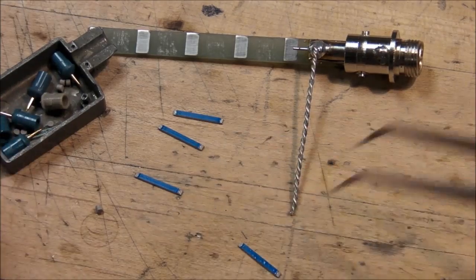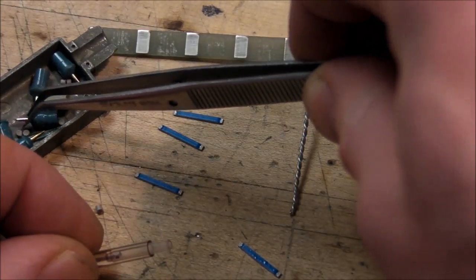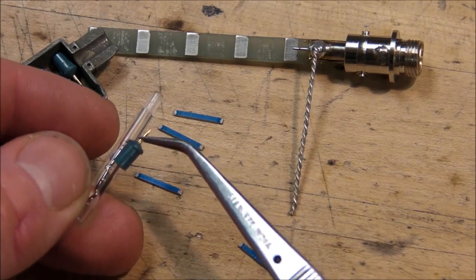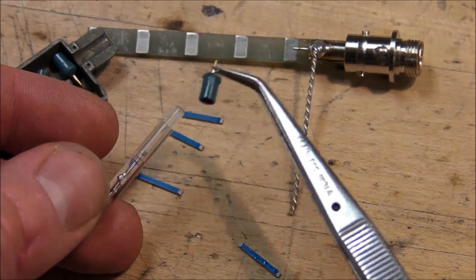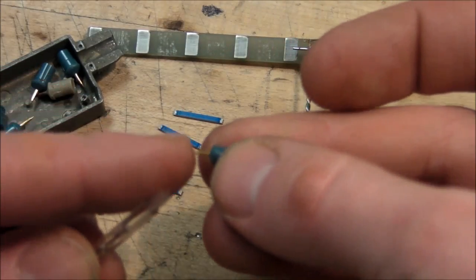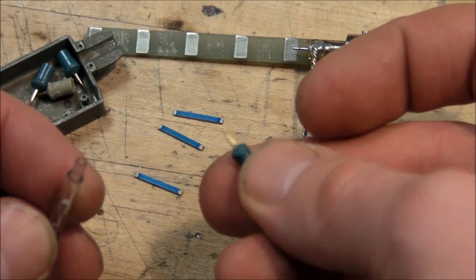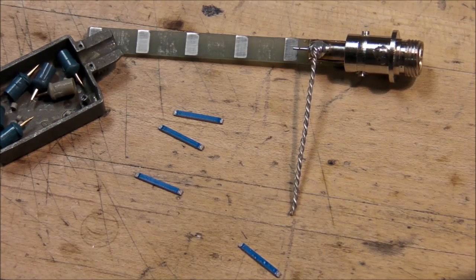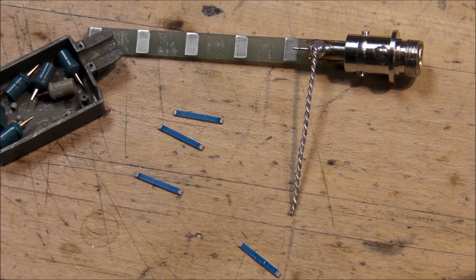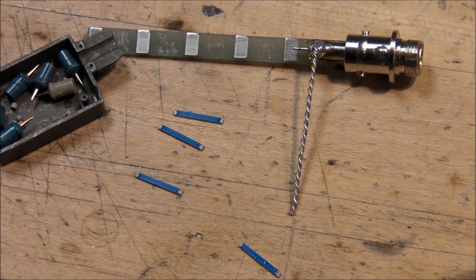There would be one of those conductive foam pads on either end of it, one going to the wire that goes to the coax cable, and then one that makes contact with the metal pin on the end of the probe. But apparently, since they were designed to be connected in such a way, they were not designed to be soldered.